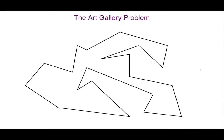This is about the art gallery problem, so let me briefly explain what it is. We have a polygon and we want to place guards such that the entire polygon is seen. A guard is represented as a single point, and a guard can see another point inside the polygon if the line segment between the point and the guard is fully contained inside the polygon.